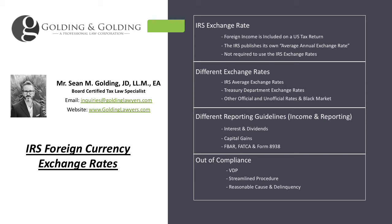One key reason to use Treasury Department rates is that certain forms, like Form 8938, will ask which exchange rate you used — if you didn't use the Treasury Department rate, it prompts further scrutiny. Using the Treasury Department exchange rate, most people default to the fourth quarter December rate, removes that concern. If you don't want to use the Treasury Department or IRS rates, there are other options such as OANDA, especially for spot rates, as well as X-rate and a few others.